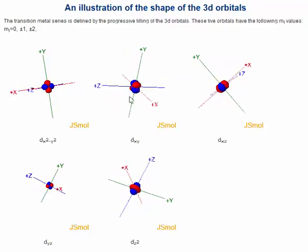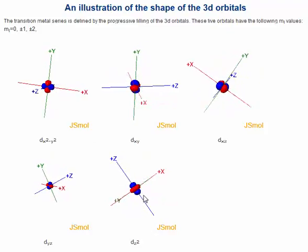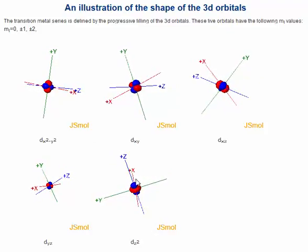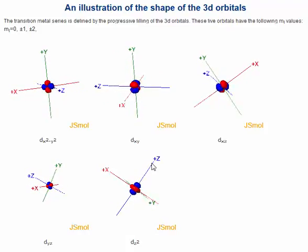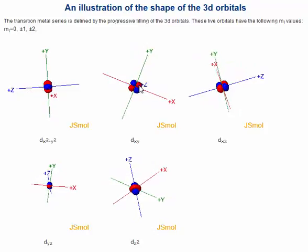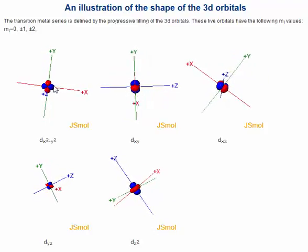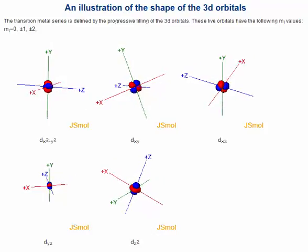All of these orbitals, except for this one, the dx² - y², and this one, the dz², in which this basic blue lobe is oriented along the z-axis, all the rest of these lobes are in between the axes and not aligned directly along the axis. And that's really important in the next slide.